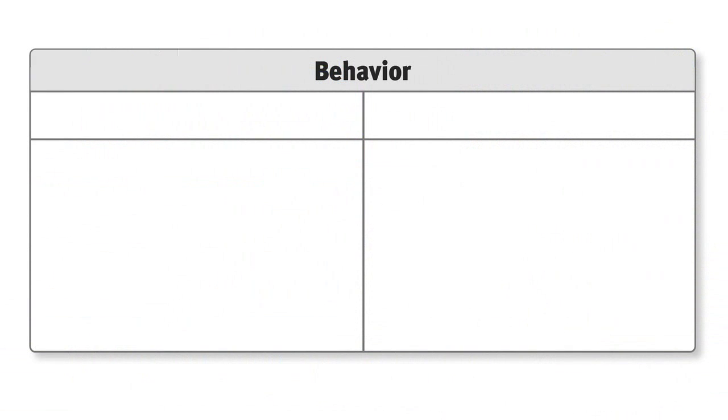To begin the activity, make a two-column chart and label it behavior. At the top of the first column, draw a stick figure of a person. At the top of the second column, draw a fish.